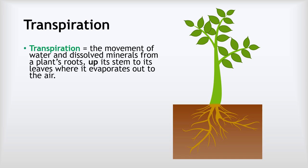Transpiration is the movement of water and dissolved mineral ions from a plant's roots up its stem and to its leaves, where it evaporates out into the air. Transpiration is a one-way movement from the roots up towards the rest of the plant.